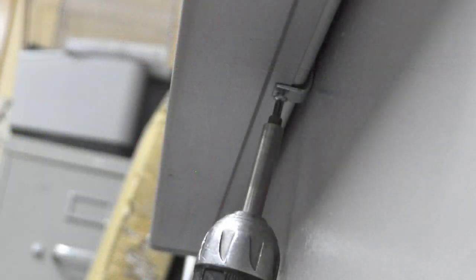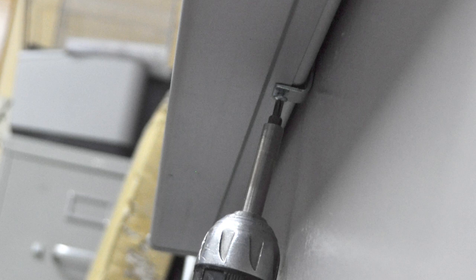Attach the bracket at the bottom to the wallboard using the short screw that was provided in the hardware pack. Start with the middle lower bracket.